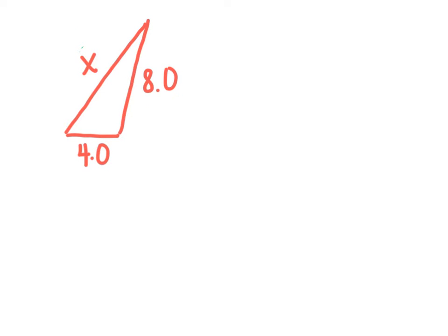So I want to know what are all the lengths that will work for X. There's a quick, easy way to do that. To find the lowest that X can be, all you need to do is subtract the two sides that they give you. So if I do eight minus four, I end up with four. So I know that my side has to be bigger than four. We already figured out that three doesn't work. If I plug in four, four plus four is eight — that's not bigger than eight, so it has to be bigger than four.